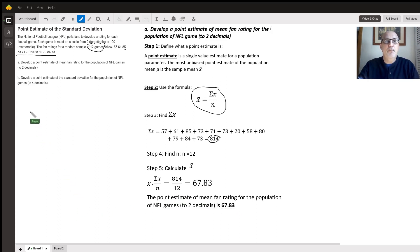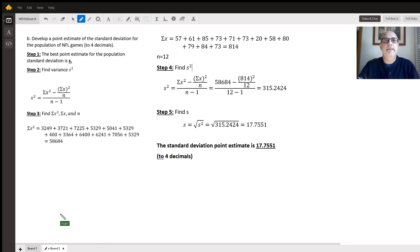For Part B, we're going to do standard deviation. The best point estimate for the population standard deviation is the sample standard deviation, which is S. In order to find S, you need to find S squared. We have a formula for S squared, which is the sum of x squared minus the sum of x squared over n, divided by n minus 1. The formula seems complicated, but it really isn't if you just find the different parts.